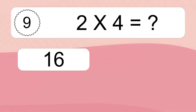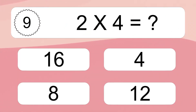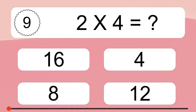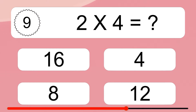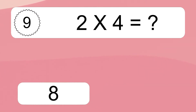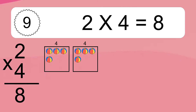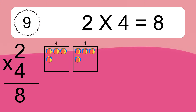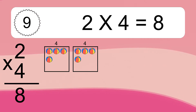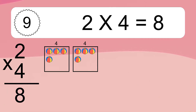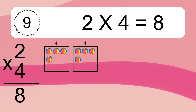2 times 4 equals what? 2 times 4 equals 8. We have 2 boxes, and each box has 4 colorful balls inside. If you count all the balls in all the boxes together, you will have 2 times 4 balls. This equals 8 balls.